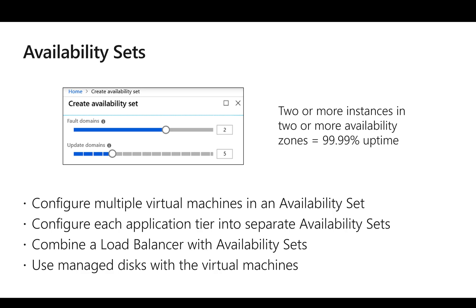If heterogeneous workloads are present in the same availability set, one functionality's VMs might go down while others are up, and we won't get 100 percent availability for the end-to-end application. That's why we recommend creating an availability set for each application tier where all VMs perform the same functionality. Since we're deploying multiple VMs in an availability set, we normally load balance using either Azure Load Balancer or Application Gateway. It's also recommended to use managed disks to avoid performance and availability issues.